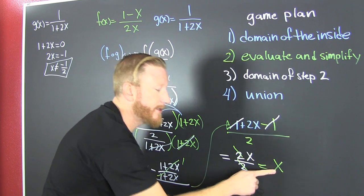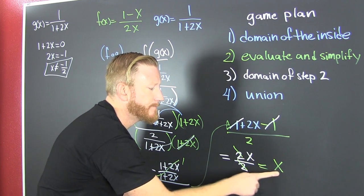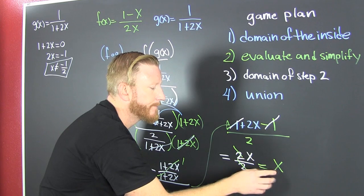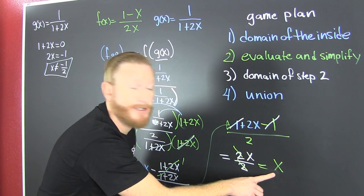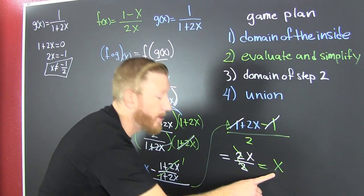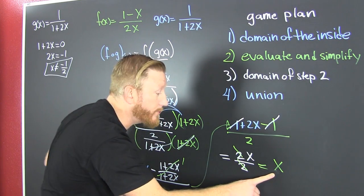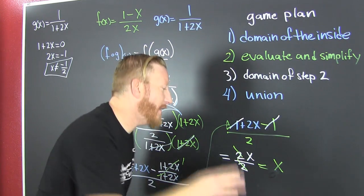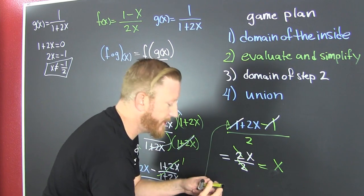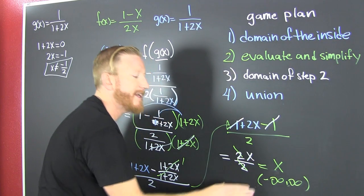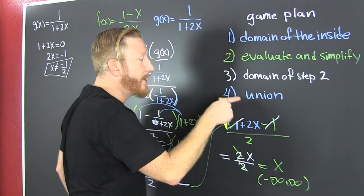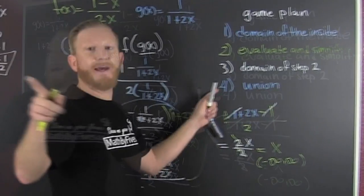Now what's the restriction here? There is no restriction there. You're not dividing by 0, you don't have any roots, there aren't any logarithms, no trig functions. So what? No restrictions. That one's everywhere. So now we're on to step 4. We need to put them together.